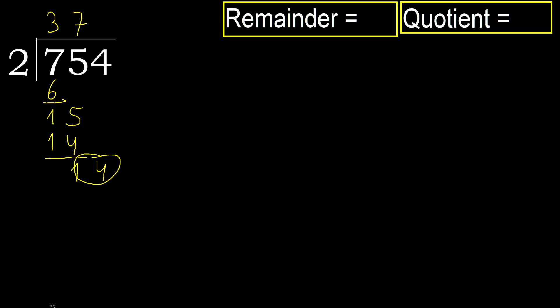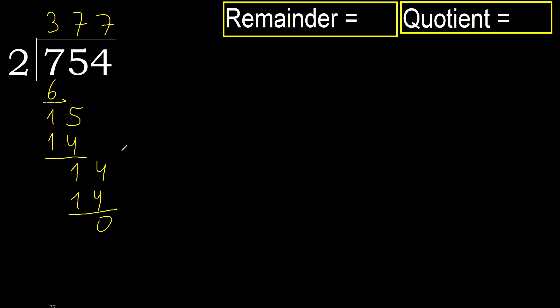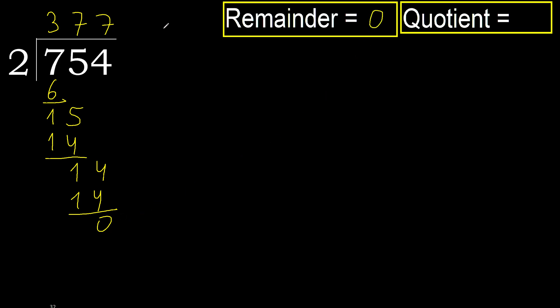Next, 14. 2 multiplied by 7 is 14. That is not greater. Subtract. Next, there is no number, therefore finish it. 0 remainder — therefore 754 divided by 2 is 377.